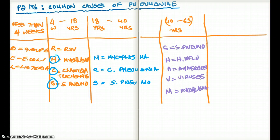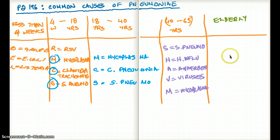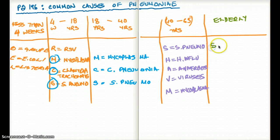Now we're on the last age group — the elderly. I don't have a mnemonic for this group. The most common cause of pneumonia in general, regardless of age, is Strep pneumo, so we have Strep pneumo first in the elderly as well. Then influenza follows.